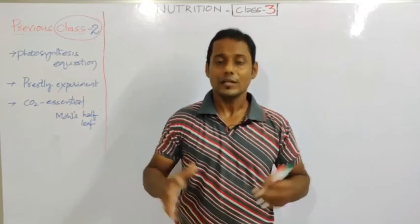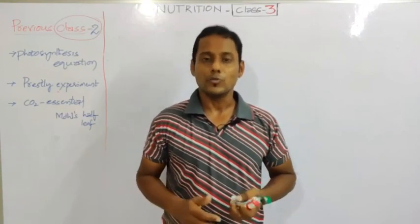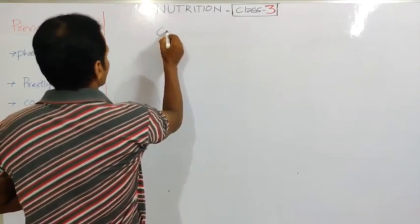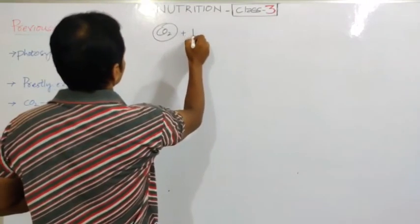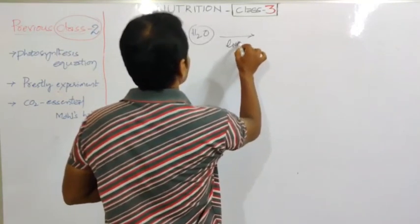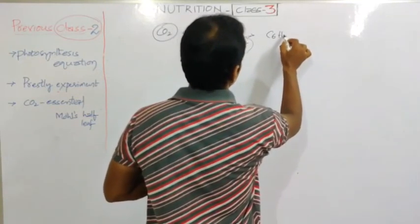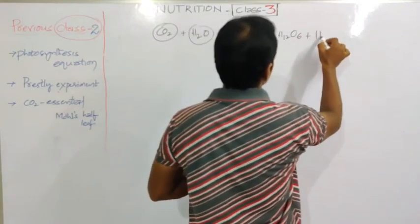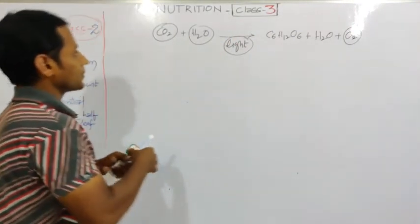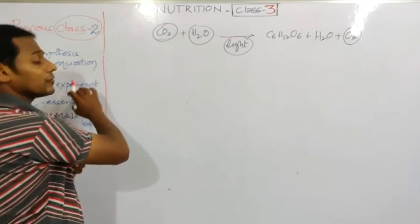We did an experiment to prove that carbon dioxide is essential for photosynthesis. The photosynthesis equation shows that carbon dioxide, water, and light together produce glucose as the final product, and oxygen is also liberated. We already did an experiment proving carbon dioxide is an essential factor for photosynthesis.